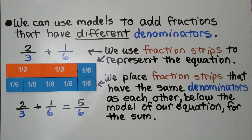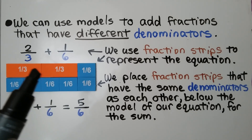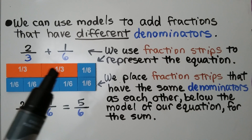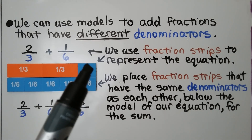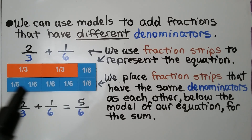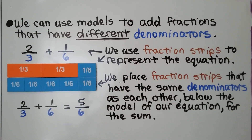We can use models to add fractions that have different denominators. Here we have 2 thirds plus 1 sixth. We use fraction strips to represent the equation. We have two 1-third pieces and a 1-sixth piece. We place fraction strips that have the same denominators as each other below the model of our equation for the sum.